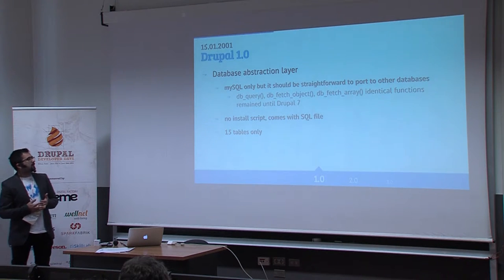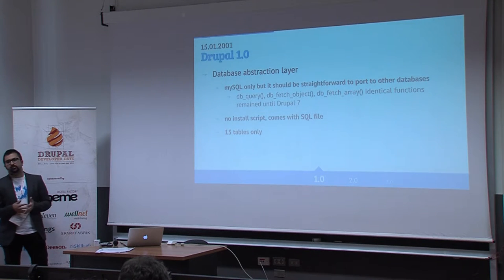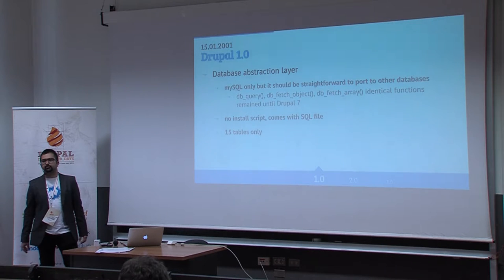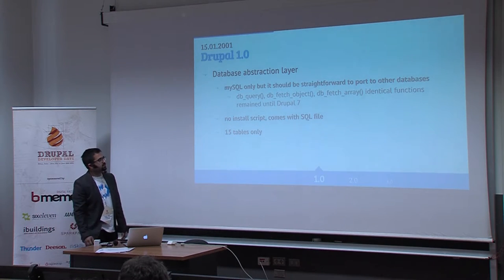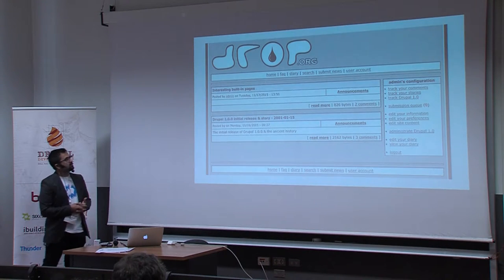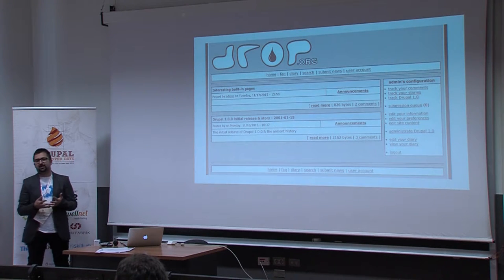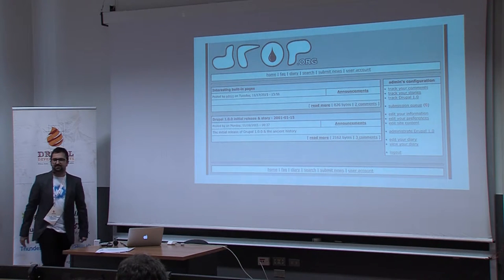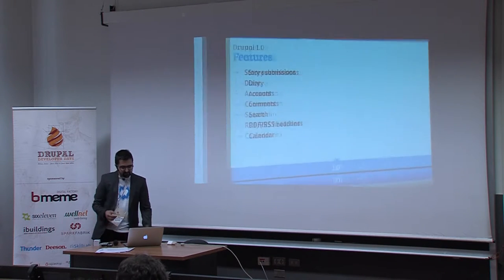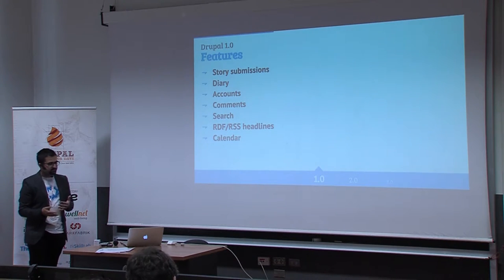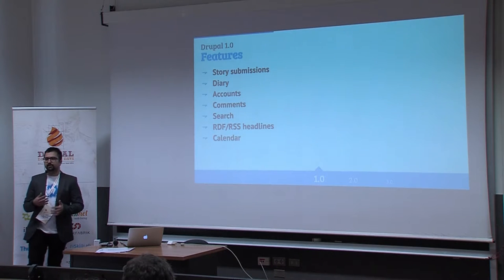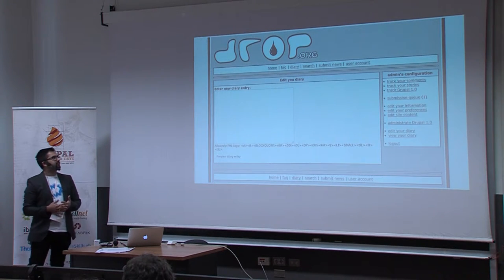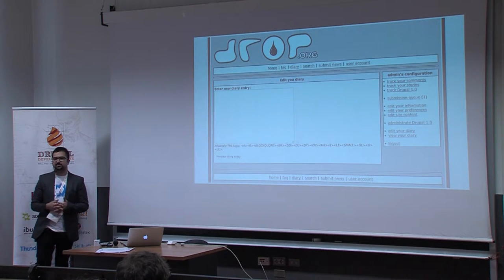One of the important early features was the database abstraction layer. At the moment it supported MySQL only, but it was easy to port to other databases. From the first version it had functions like db_query and db_fetch_object, which are still used in Drupal 7. It didn't have an install script — there was just an SQL dump you had to manually import. There were only about 15 database tables. The site had a few options: you could submit stories, have diaries, have accounts with login and registration, search, and comment on content.